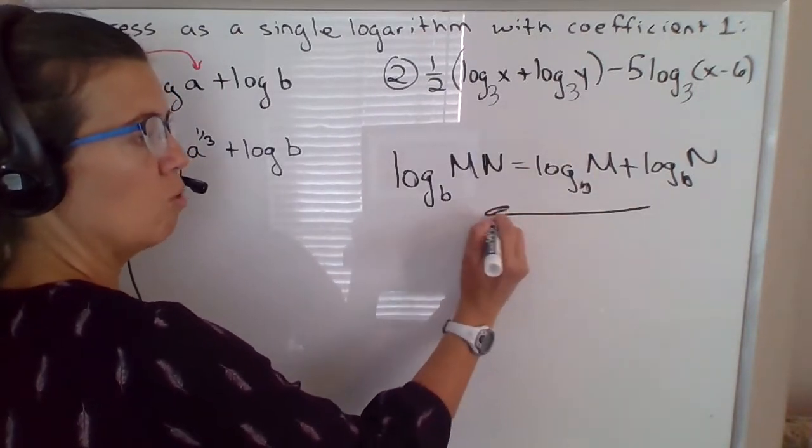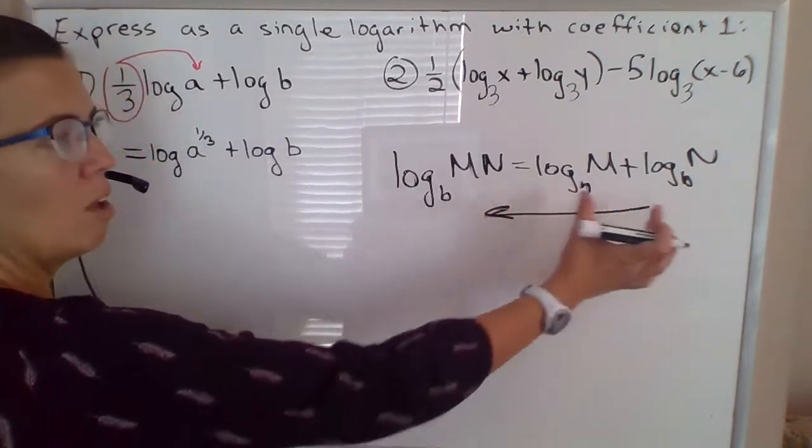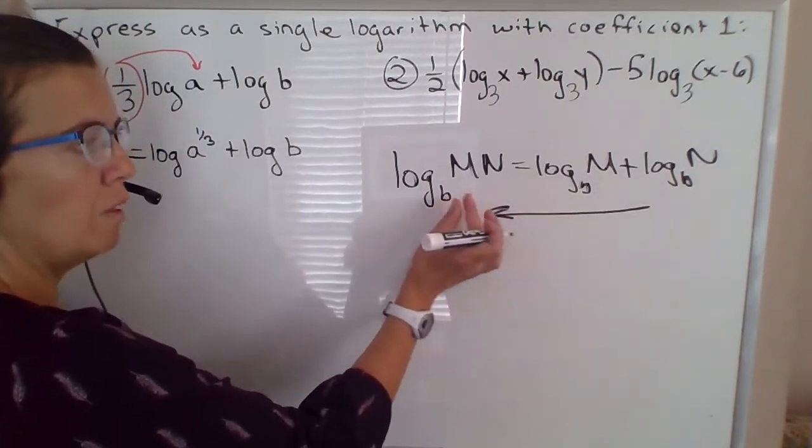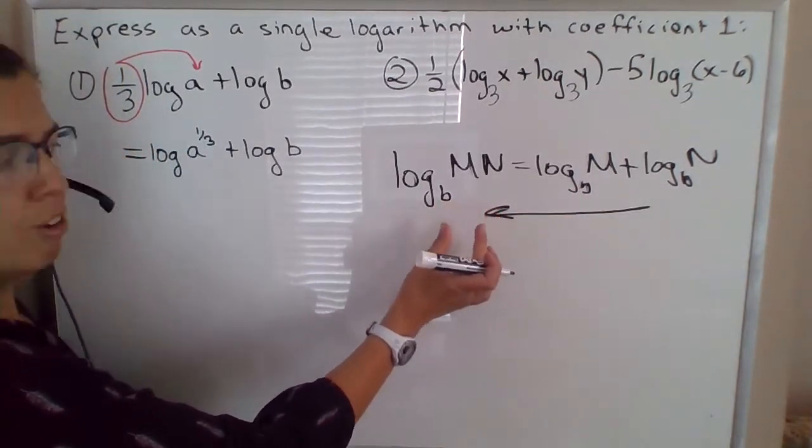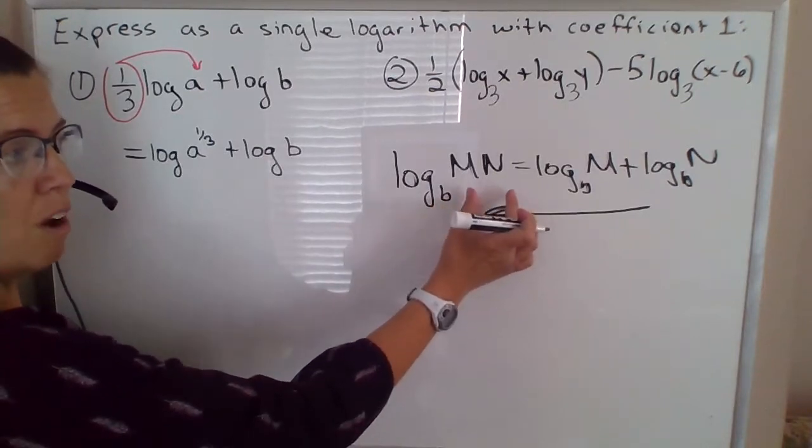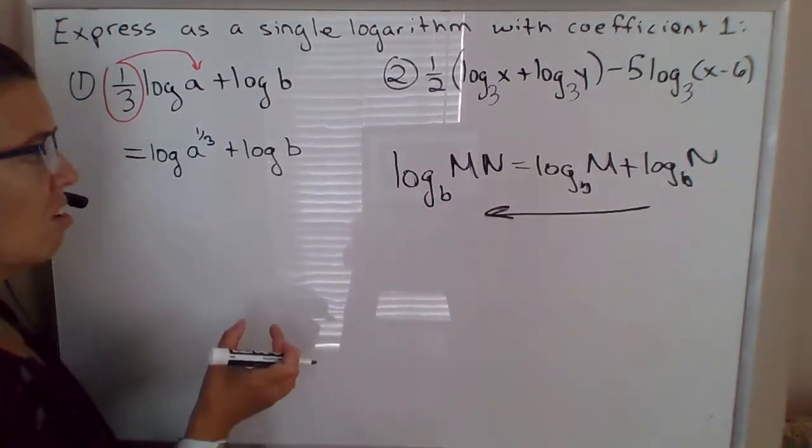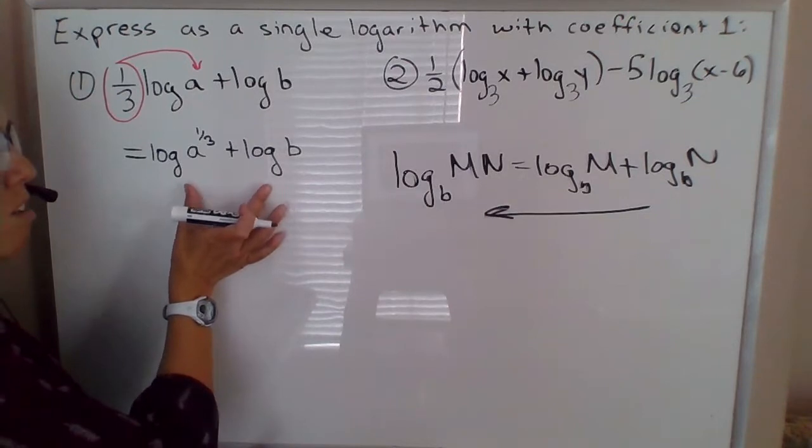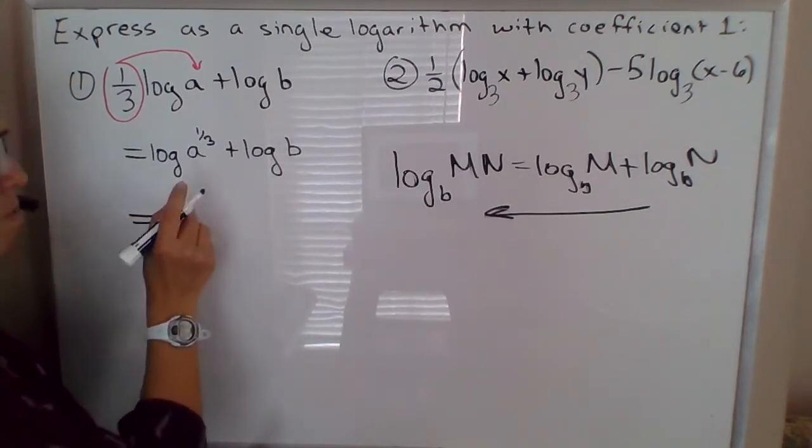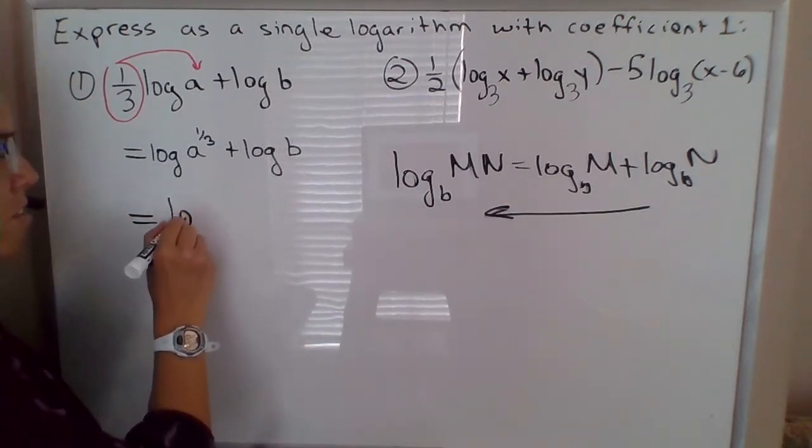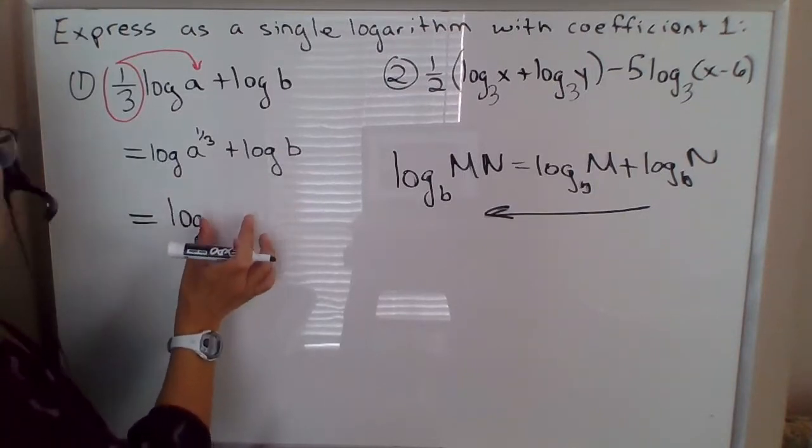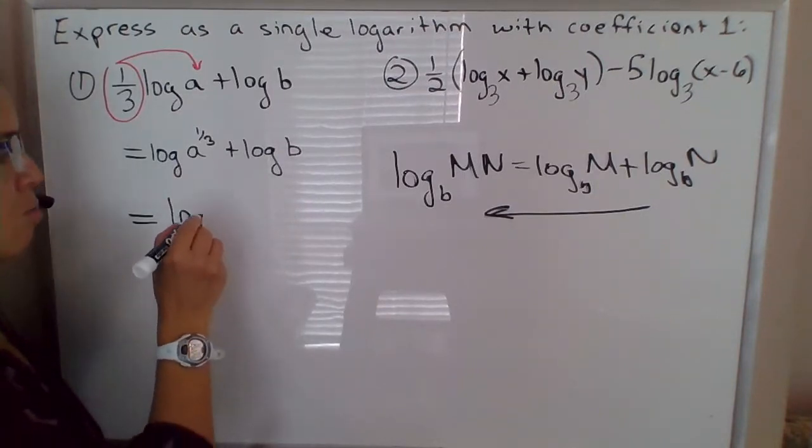Now we're going to go in this direction. So we have the sum of two logarithms, we're going to push them back together into a single logarithm of the product of those two expressions. And so keep in mind when you combine these, you should only be writing log once. That's the whole point is you take your two separate logarithms and condense it to a single logarithmic expression.